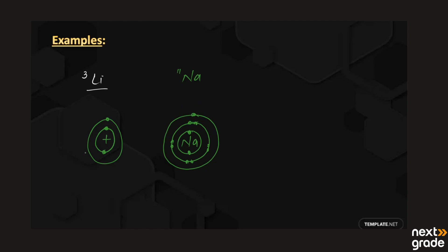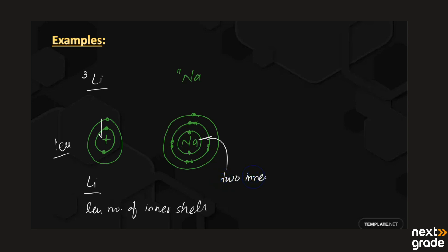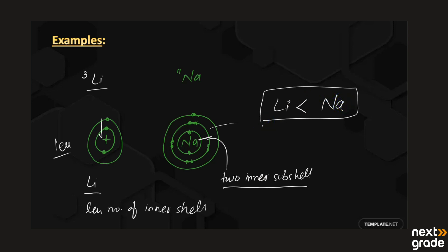In lithium, the distance between the nucleus and the valence shell electron is less, because lithium has fewer inner shells. Sodium has 2 inner shells compared to lithium. So lithium has less shielding effect compared to sodium. This is a simple example of the shielding effect between elements in the periodic table.